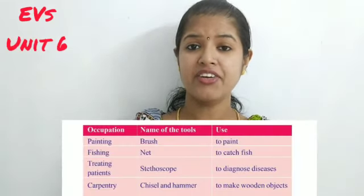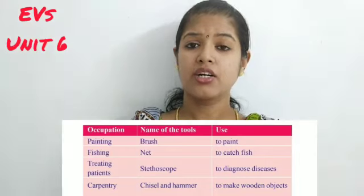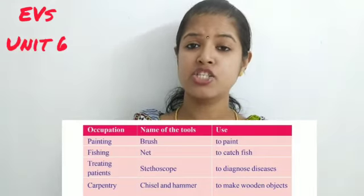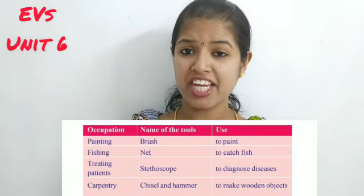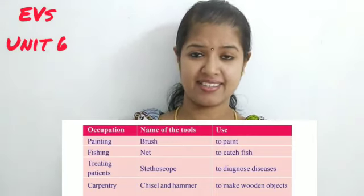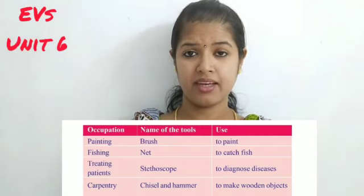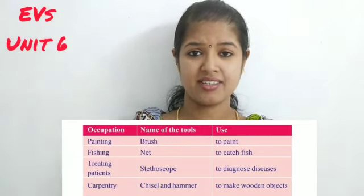Now let's have a look at the tools used for other occupations. For fishing, we use a net, and it is used to catch fish. For treating patients, we use a stethoscope, and it is used to diagnose diseases. For carpentry, we use a chisel and hammer to make wooden objects. There are many more occupations as well. These are examples of some occupations and their tools.